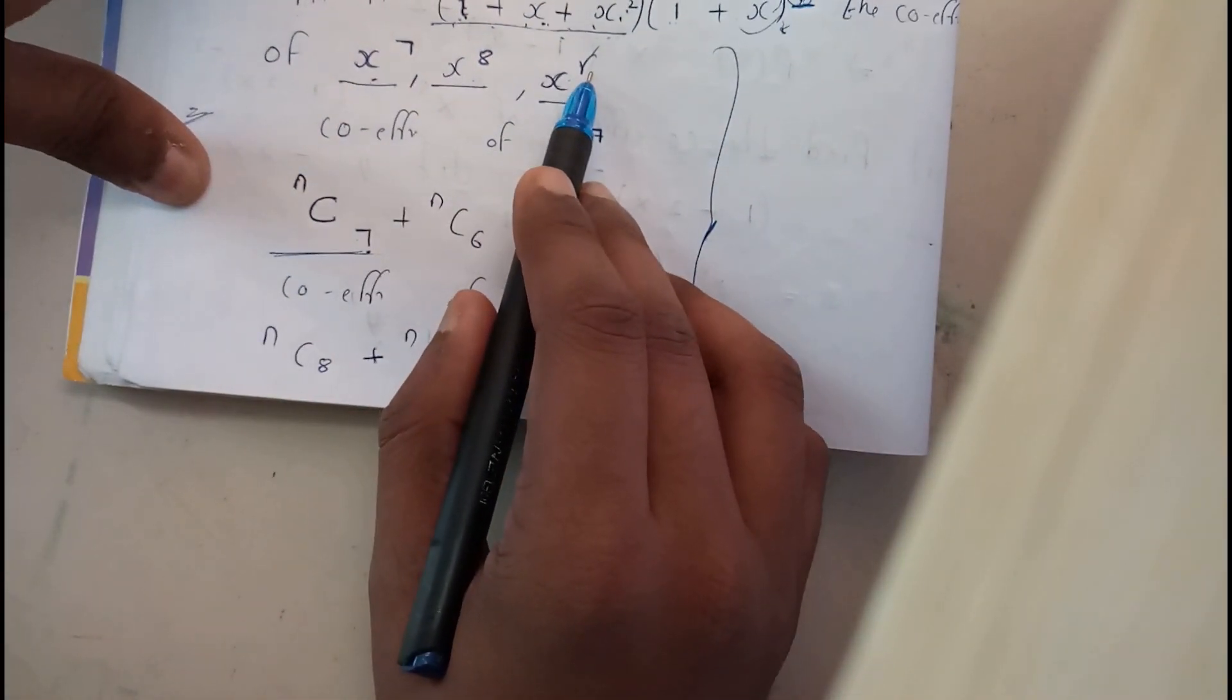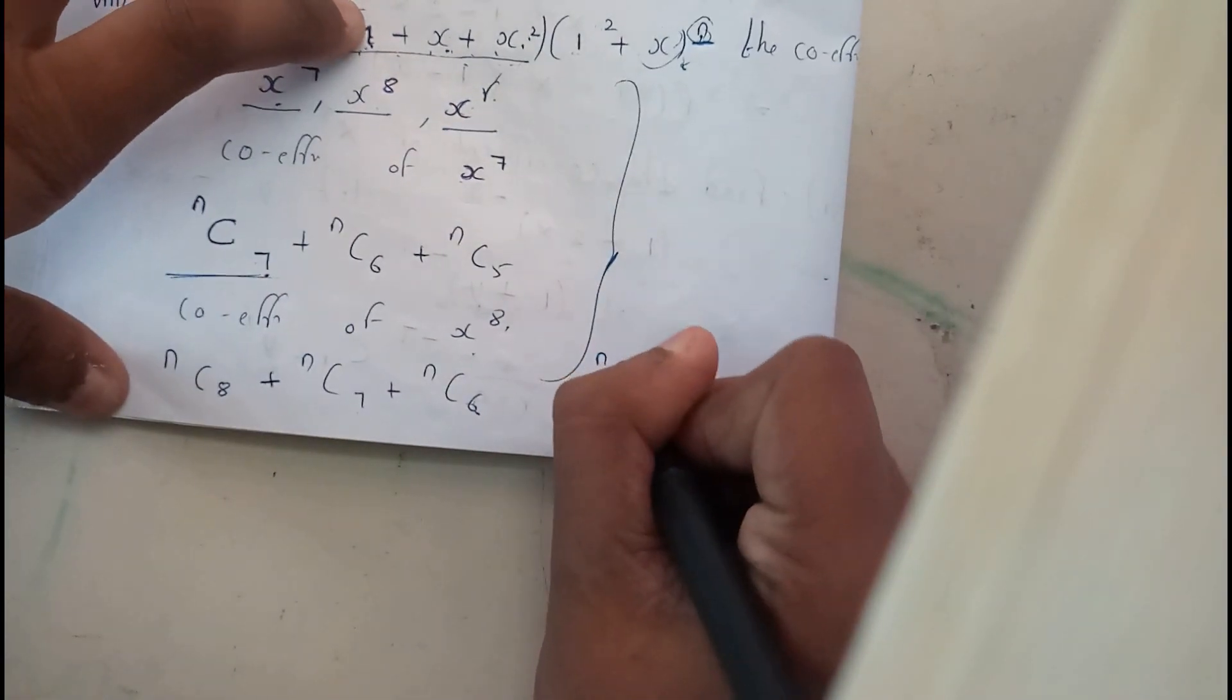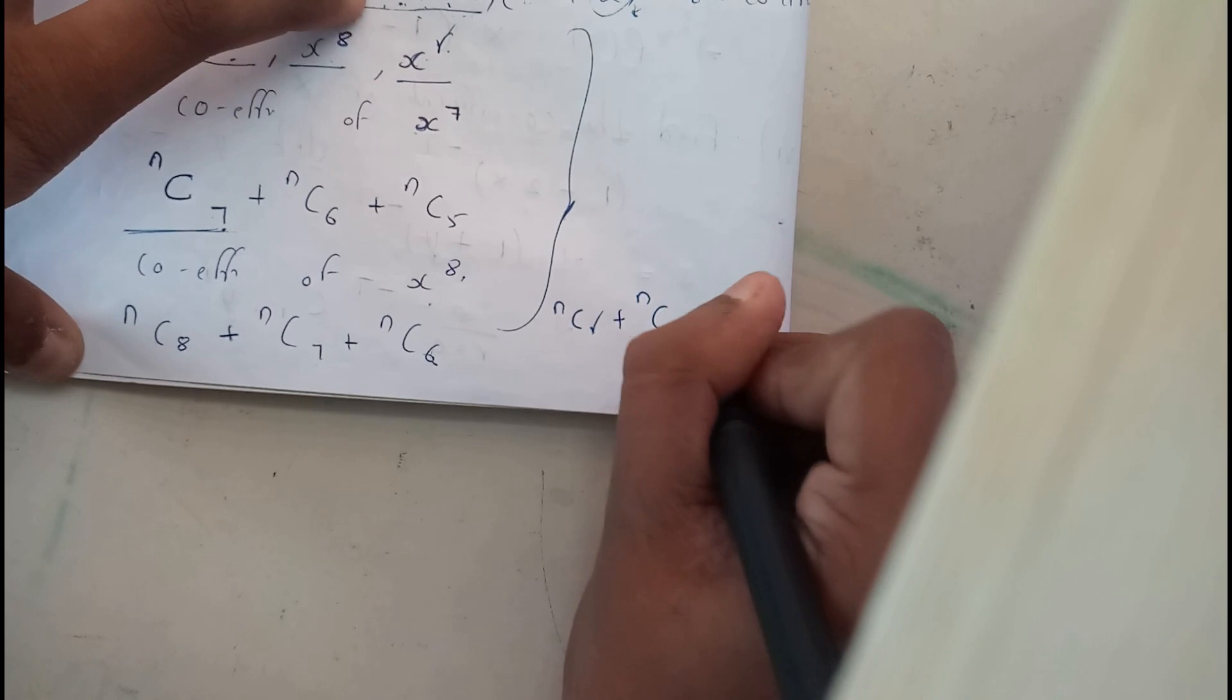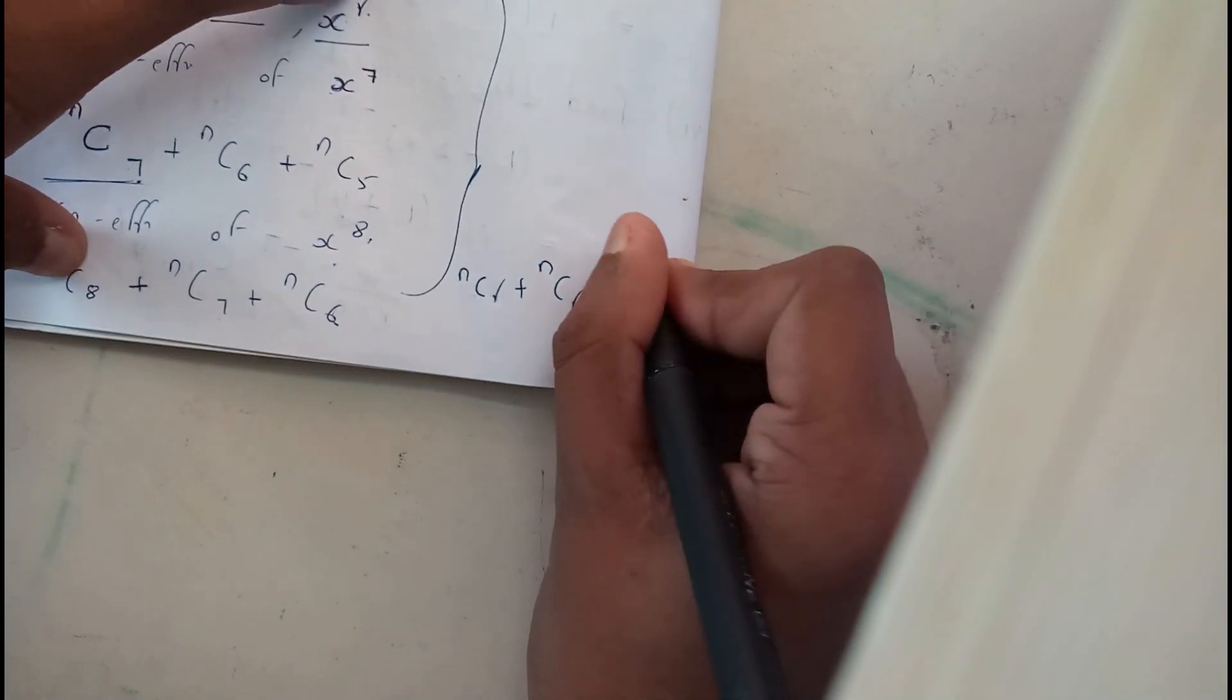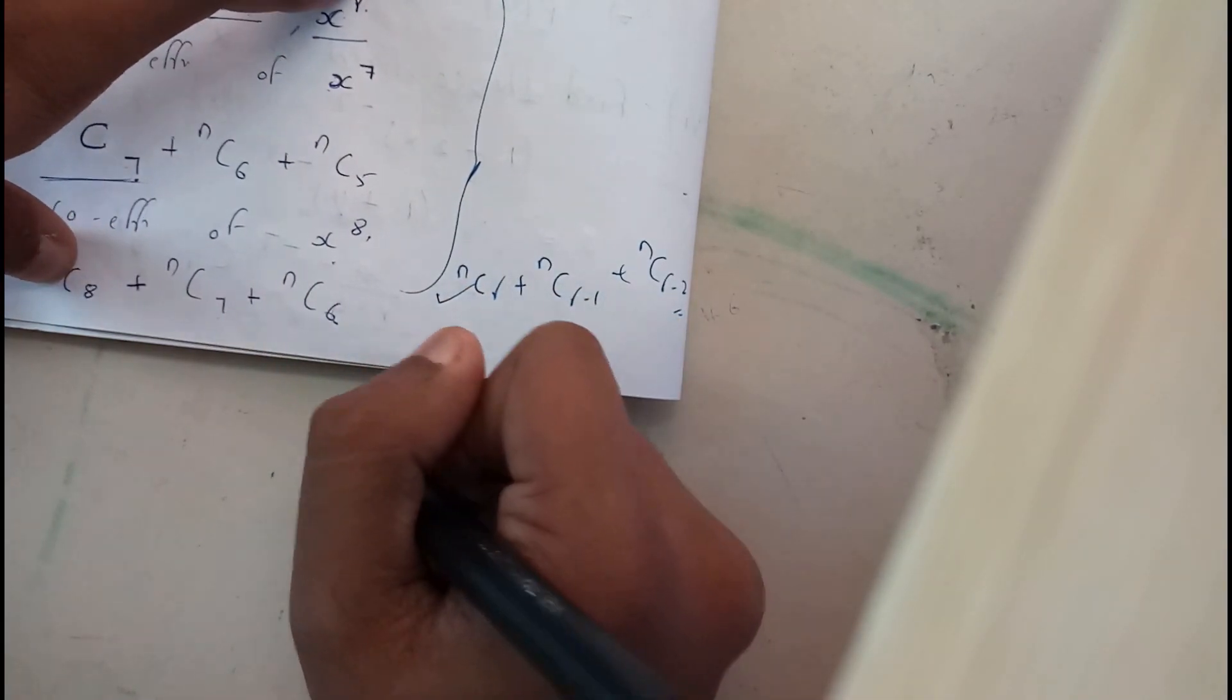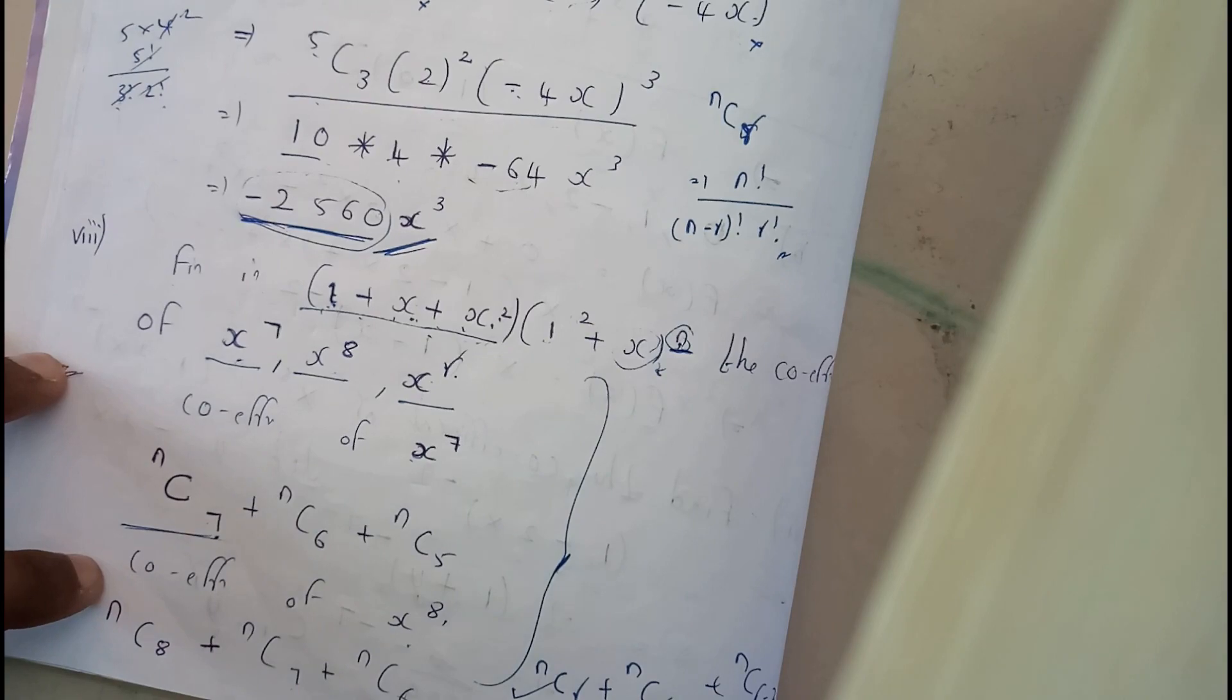So, x power r. I need here NCr. Here, I need r minus 1 plus NCr minus 1 plus NCr minus 2. That is it. I hope everyone got a small idea on how to find the coefficients of a particular term. Thank you guys. Thanks for watching.